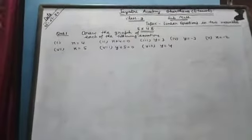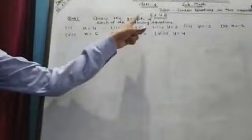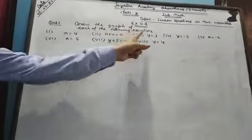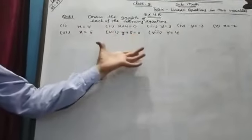Now look at exercise 4.B, question 1. Draw the graph of each of the following equations. In this, students, we have given equations. This equation you have to show on graph.